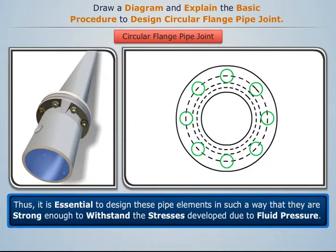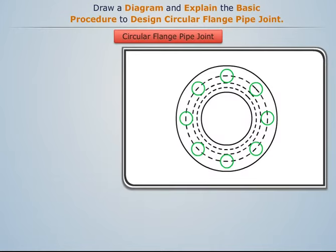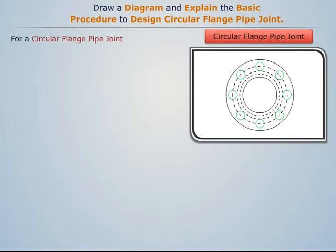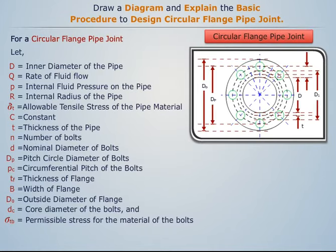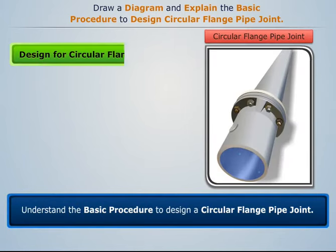It is essential to design these pipe elements in such a way that they are strong enough to withstand the stresses developed due to fluid pressure. The preferred nomenclature for a circular flange pipe joint are noted. Now let's understand the basic procedure to design a circular flange pipe joint.